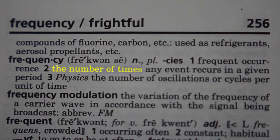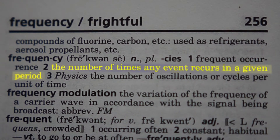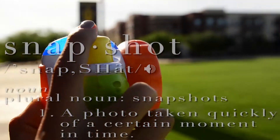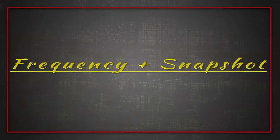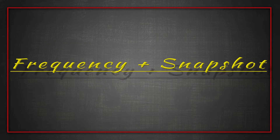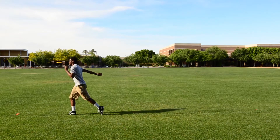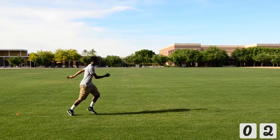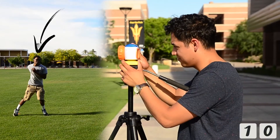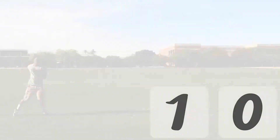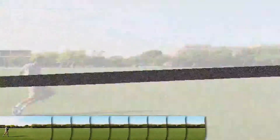Frequency is the number of times any event reoccurs in a given period. A snapshot is a photo taken quickly of a certain moment in time. We can compare these two concepts together by demonstrating a runner running from one spot to the other. If the runner runs from one place and back in 10 seconds, and the photographer takes a picture every 10 seconds, all the pictures of the runner will be in the same location.